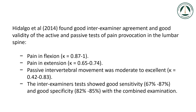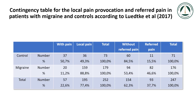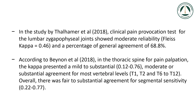In the study by Ludeke et al. 2017, the pain provocation test for the cervical spine by palpation and sustained pressure has a high sensitivity and specificity in cases of migraine. In the study by Thalhamer et al. 2018, the clinical pain provocation test for the lumbar zygapophysial joints showed moderate reliability: Fleiss Kappa equals 0.46 and a percentage of general agreement of 68.8%. According to Baynon et al., in the thoracic spine for pain palpation, the kappa presented mild to substantial (0.12 to 0.76), with moderate or substantial agreement for most vertebral levels T1, T2, and T6 to T12. Overall, there was fair to substantial agreement for segmental sensitivity (0.22 to 0.77).